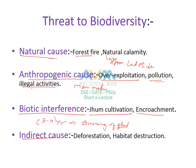The fourth threat to biodiversity is the indirect cause — that is, deforestation and habitat destruction. Due to rapid urbanization and rapid industrialization, there is a huge loss of forest, which falls under deforestation and habitat destruction.